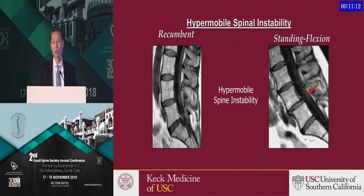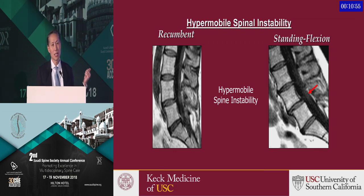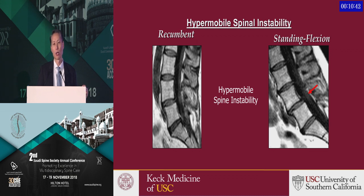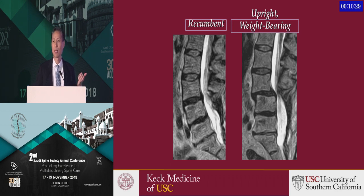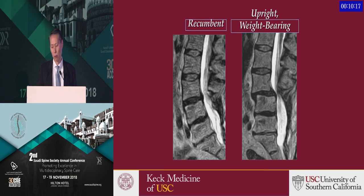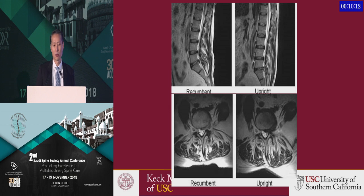Here are some case studies. Some of this you'd pick up on flexion-extension x-rays. This is a hypermobile spine — with the MRI I can actually see the structures causing nerve impingement and where the instability is. I would see the instability on flexion-extension x-rays, and I could infer neurologic stenosis from a regular MRI, but with dynamic MRI we can really see which structures are causing the problem.